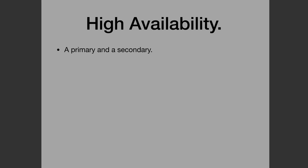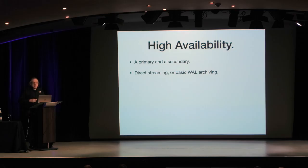If this 10-gigabyte database is a production-critical database and you want high availability, you can achieve this easily. Just have a primary and a streaming secondary using binary streaming replication. You don't need anything more fancy. Use direct streaming or just WAL archiving. In this case, manual failover may be what you want - you don't just get the pager going off, sleepily roll out of bed at 3 in the morning, promote the secondary, and go back to bed.